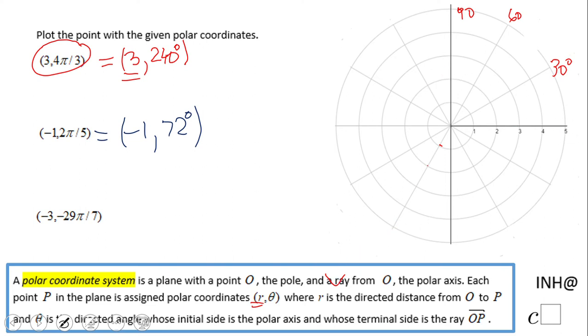Again, we're going to start from the polar axis and you're going to rotate 72 degrees - 30, 60, it should be somewhere here. But that one is negative 1, right? So basically after you draw this line, you want to move the opposite direction.